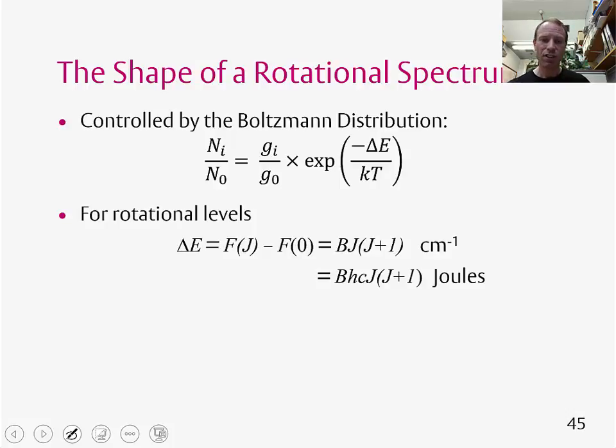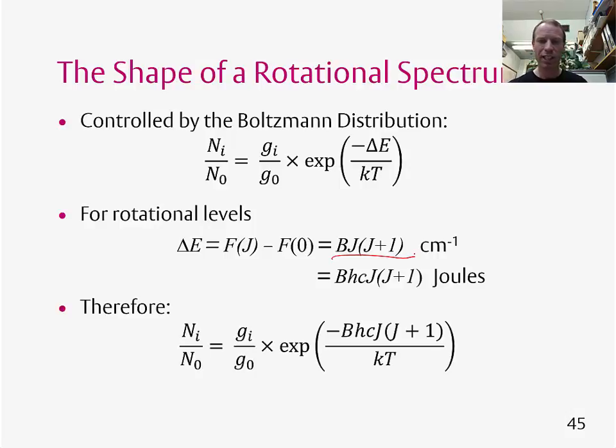For rotational energy levels, we derived this expression here. So the energy gap is BJ(J+1), and that has units of centimeters to the minus 1. If we're going to use the Boltzmann equation, we need to remember that we have to put SI units in, so we need to convert from centimeters to the minus 1 to joules. And we do that by multiplying by hc, where c is the speed of light in centimeters per second. So we can now put this in, and this gives us this expression here.